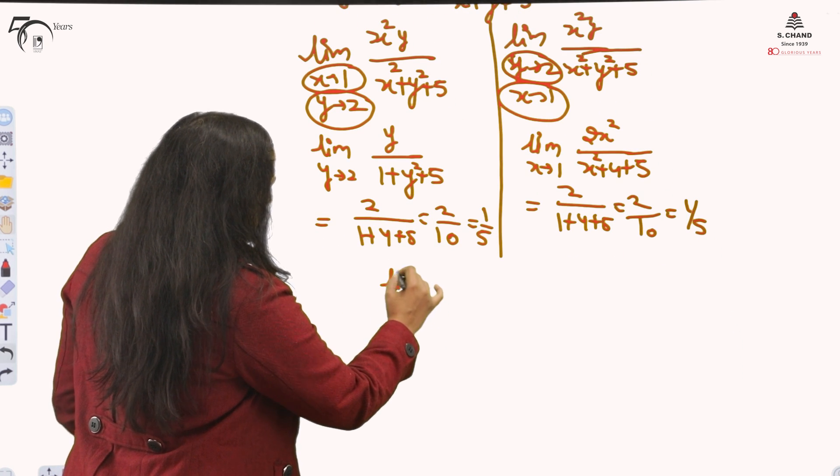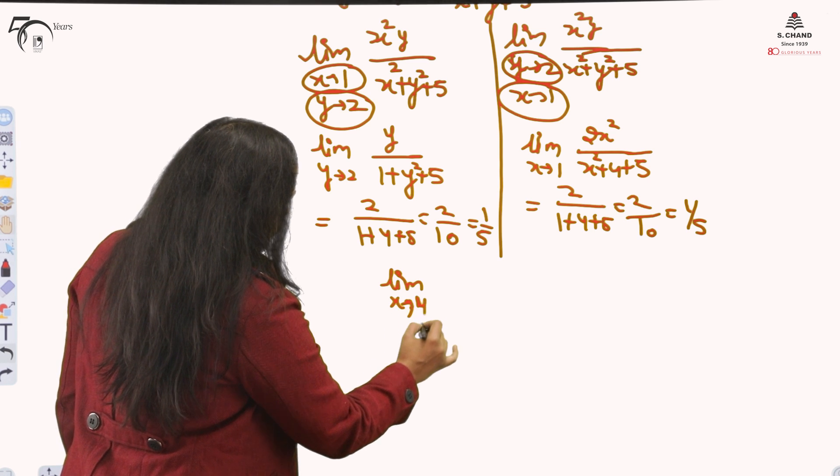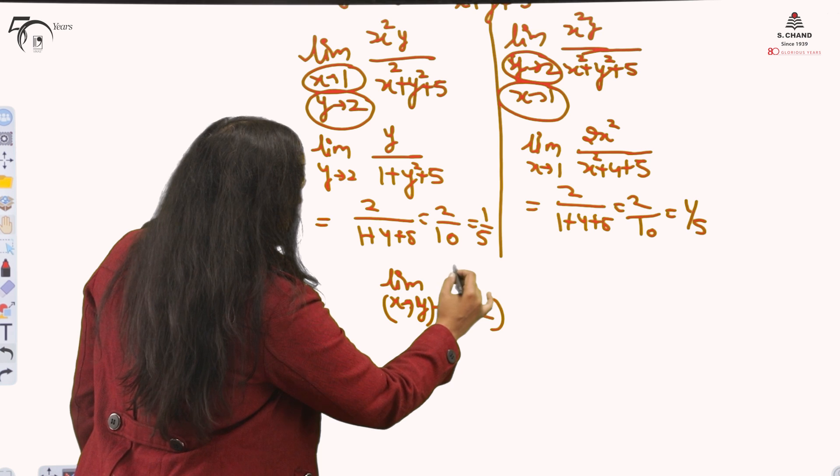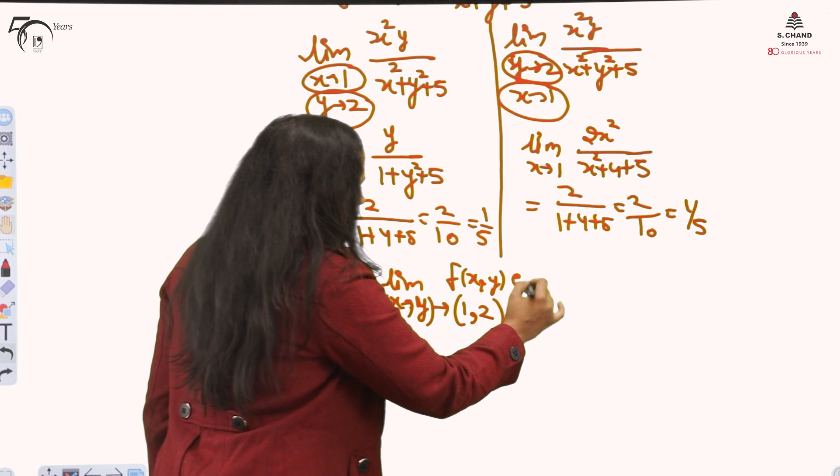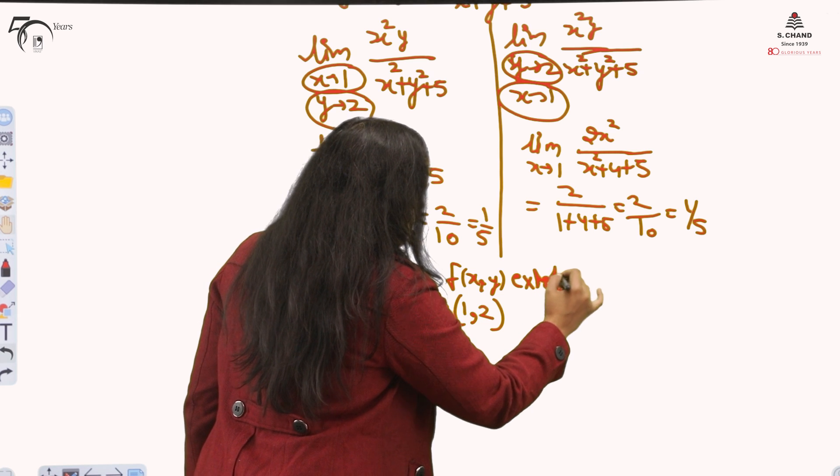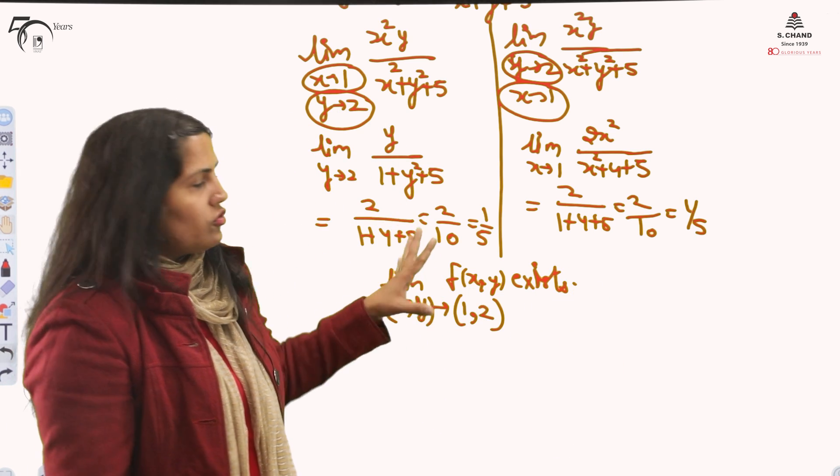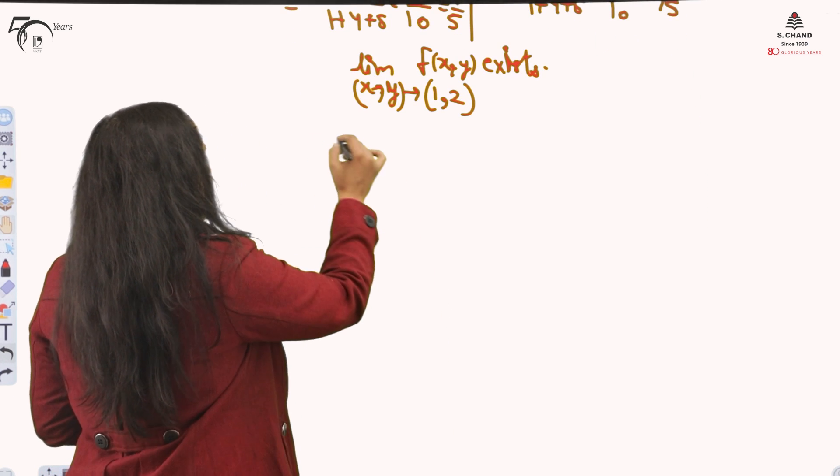Limit x tending to 1. Or we write it like this also, (x,y). x is 1, y is 2. f(x,y) exists. This way also we write in short. This exists. Now, if it is origin. If it is origin, then there is a change. And you just, with the help of the example, I will explain you.